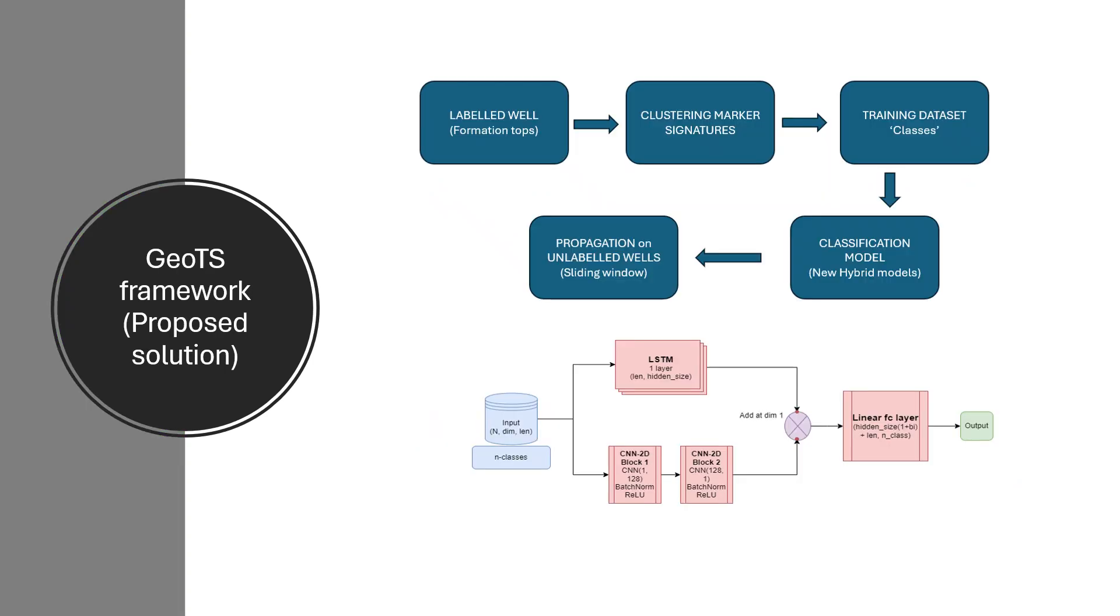In the GeoTS framework, marker signatures from labeled wells are clustered using the DTW distance, enabling robust grouping and capturing the local shifts. A classification model is then trained, assigning each marker to a specific class or a non-class.